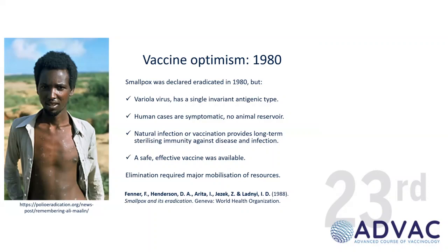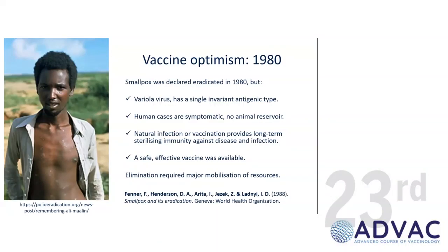Just after that, around 1977, was the last case of smallpox, and we were all very optimistic. My professor at Reading, Colin Kaplan, had been involved in the smallpox eradication campaign. I never dreamt I would be here 43 years later talking about vaccines. We'd just eradicated smallpox — we were going to eradicate everything else. But we have to remember this is a very particular type of disease: a single antigenic type, not a zoonosis, human cases are symptomatic, natural infection gives long-term sterilizing immunity, and there was a safe and effective vaccine. Apart from rinderpest, this was the last time eradication was done. The report card on using vaccines to eliminate disease isn't very good.